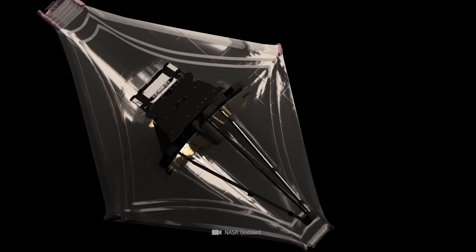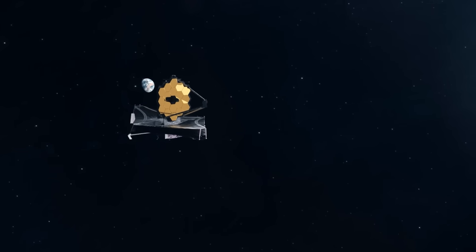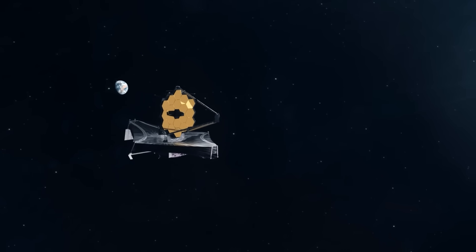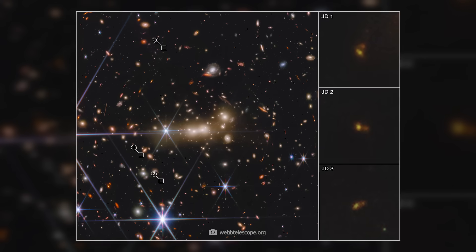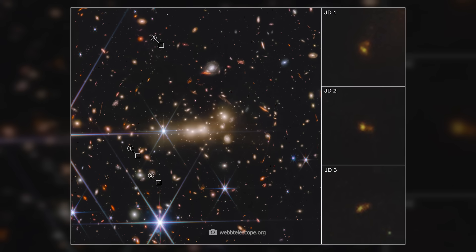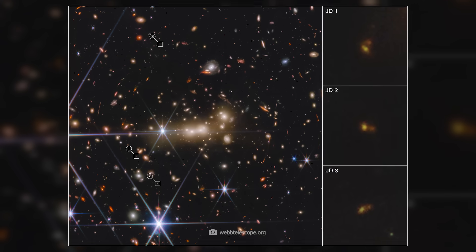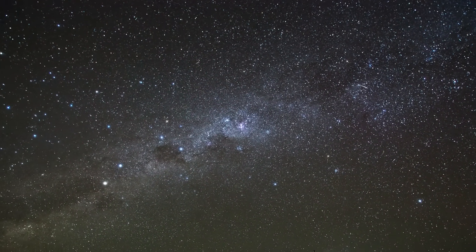With the Webb Telescope, mankind has truly achieved a masterpiece of modern astronomy and engineering. It was specially developed to look into the deepest and oldest parts of the universe. Deep images like this one are created by long exposure times, during which the telescope can collect even extremely faint light pulses from distant galaxies. The first image of this kind was a shocker.